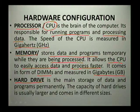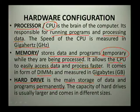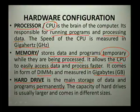The next one is the hard drive. The hard drive is the main storage of data and programs permanently. This means it is totally different from memory — remember, memory stores data temporarily. The capacity of hard drives is usually larger and it comes in different sizes. Those are the three hardware components we looked at for this lesson. I hope you enjoyed. We'll see you next time. Goodbye.